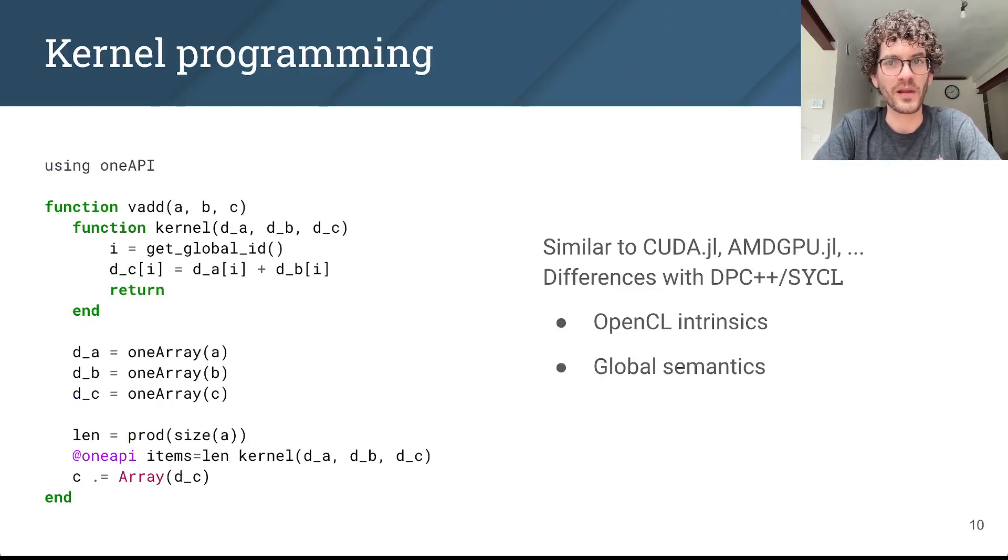Here's an example of the vector addition I showed previously, but now implemented in Julia. There's a couple of noteworthy differences between Julia and C++ to program in oneAPI. For example, we use OpenCL's indexing intrinsics. That's the call to get_global_id here.